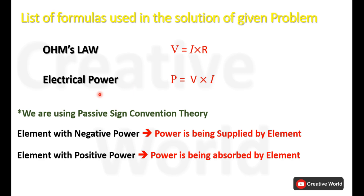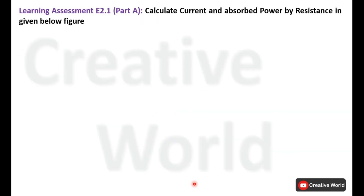We will also be using electrical power, which is the product of voltage and current, and the passive sign convention theory. According to this theory, elements with negative power will be considered as power suppliers, and elements with positive power will be considered as power absorbers.